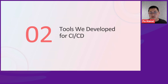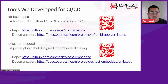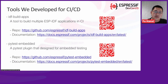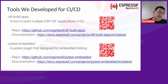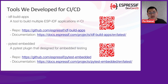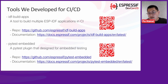Here are the tools we developed for CI/CD. The first one is called IDF BuildApps — a tool to build multiple ESP-IDF applications in CI systems. This tool solves the previous first two issues. I've linked the GitHub repository and documentation site, and you may scan the QR code if you're interested. The second tool is PyTest Embedded, a PyTest plugin designed for embedded testing that can easily interact with serial ports. I'll go through all the key features later.